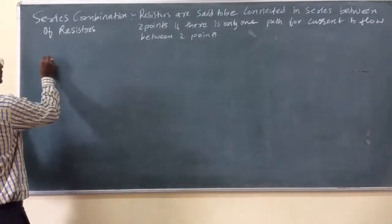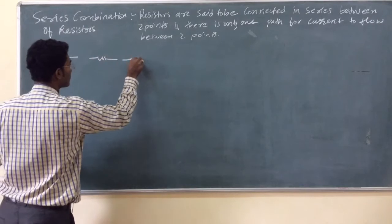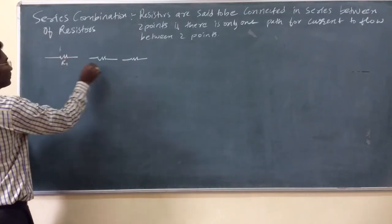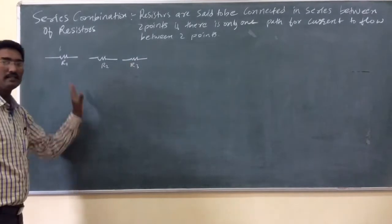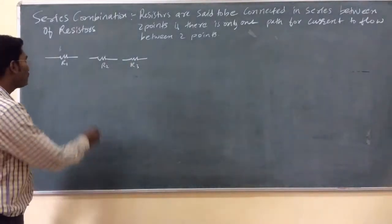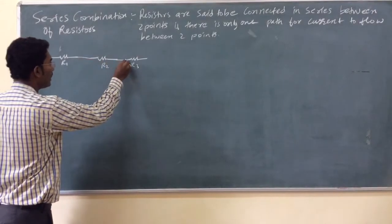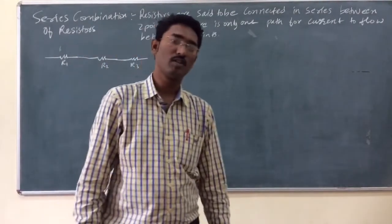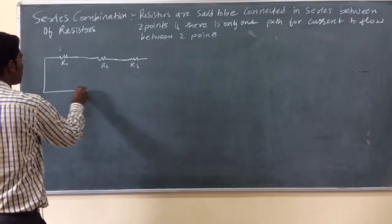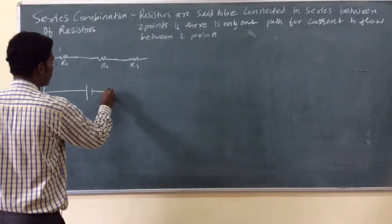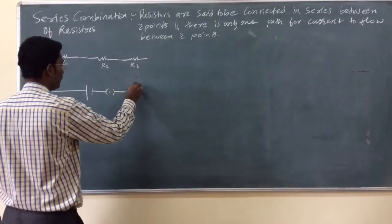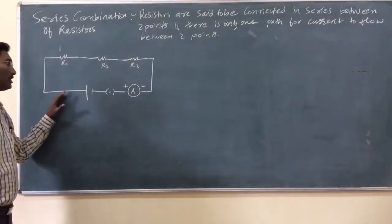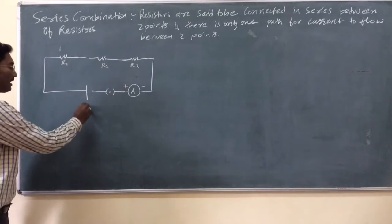In the series arrangement, suppose we have three resistors. Each resistor has two ends. We can see here — this is resistance R1, this is resistance R2, and this is resistance R3. If we join one end of a resistor to the other end of the next resistor, then this type of arrangement is said to be a series arrangement. If you connect this series arrangement to a battery, then these three resistors are connected to a battery having a potential difference V.